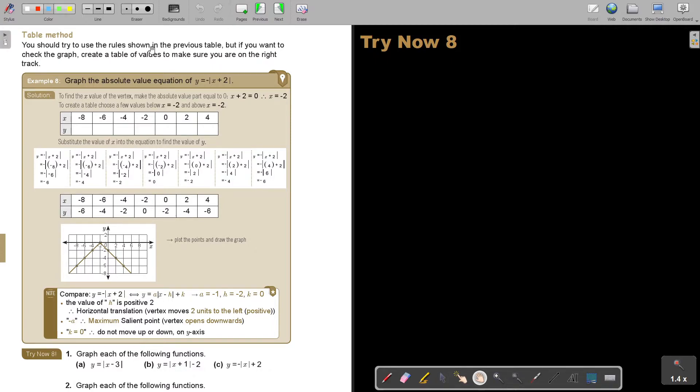And that is the table method. You should try to use the rules shown in the previous table, but if you want to check the graph, create a table to make sure you are on the right track. So I'm first going to show you the table method, but then afterwards I will also show you how to do it with algebra.